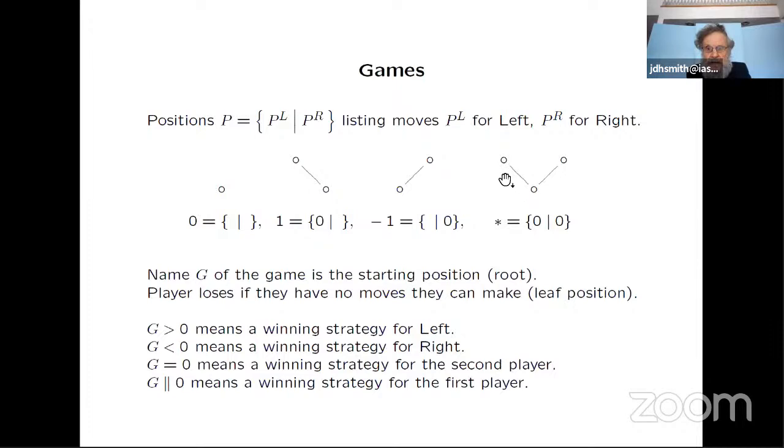And then let's finally look at this game star. Whoever starts they have a move and then they're going to win because the second player will be put in the position of having no moves. So star, it's not comparable with zero in the case of these three first things. And in general g parallel to zero, that means there's a winning strategy for whichever is the first player, could be right could be left. So star is not a number, it's not comparable with zero.